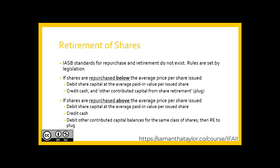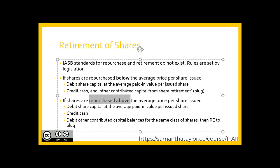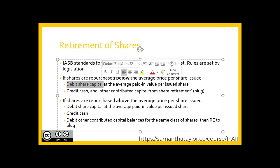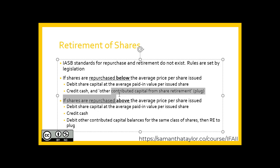There are currently no IASB standards for repurchasing and retirement. To reflect the economic reality when shares are retired, we first determine whether they were repurchased below or above the average price per share issued. If repurchased below the average price, we debit common shares for the average price of shares issued, credit cash for the amount paid, and the plug—the difference—goes as a credit to other contributed capital from share retirement.